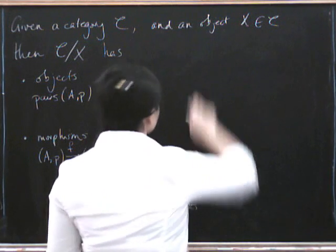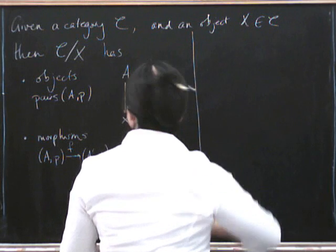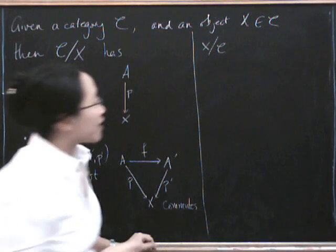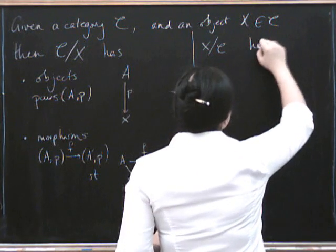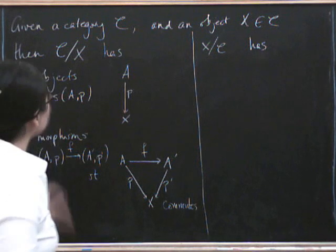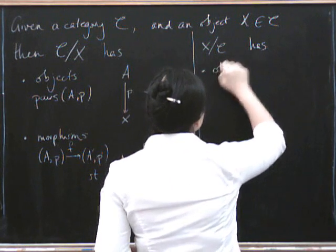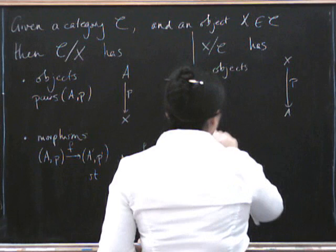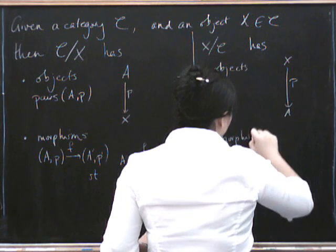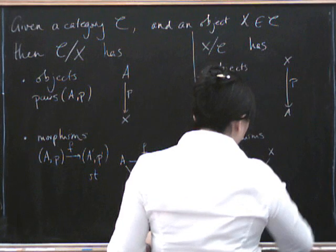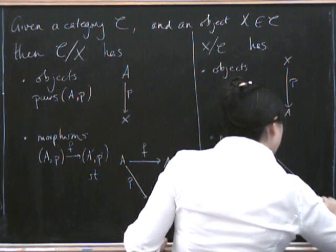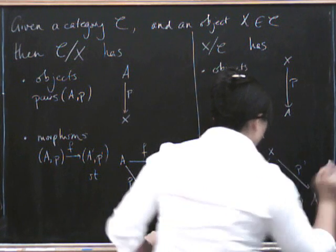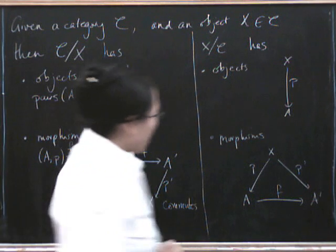Now, there's also something else which is a co-slice category or a slice under. So now we can take our object and put our category kind of under it. And it's the dual of this. So now you can do all that yourself, I suppose, if you want to. The objects, now the x is going to be at the top and the morphism is going in that direction. And the morphisms are, well, what's the data going to be? We're going to have one pair A P like that. We're going to have another pair A prime P prime like that. So this time the morphisms are going to be in that direction, making this triangle commute.